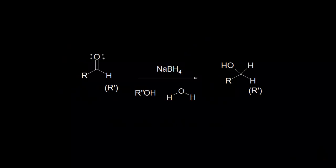Let's look at the formation of alcohols using a hydride reducing agent. We'll start with sodium borohydride. If I wanted to draw the dot structure for this, it would have boron with four hydrogens, and that would give boron a negative one formal charge, and so then we'd also have our sodium cation here.